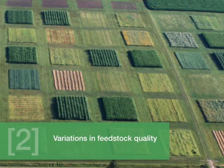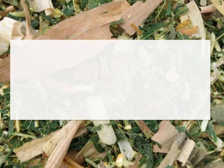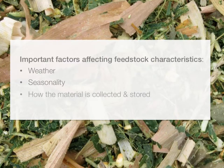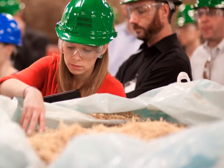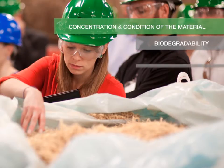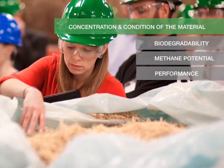Challenge 2: Variations in Feedstock Quality. Feedstock characteristics might vary significantly over time. Some important factors include the weather, seasonality, or how the material is collected and stored. These factors and many others influence the concentration and condition of the material. Variations will affect the biodegradability, the methane potential, and in turn the performance of the process.